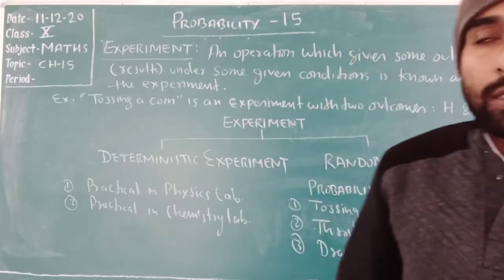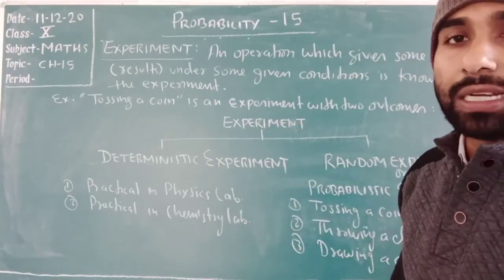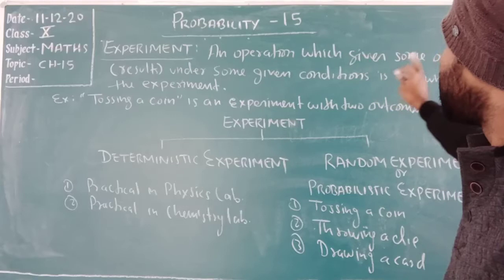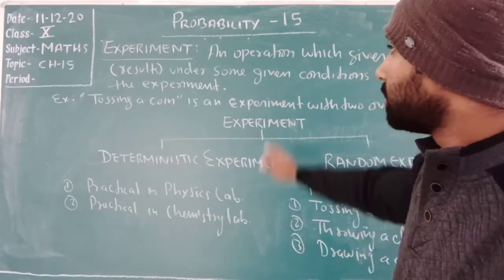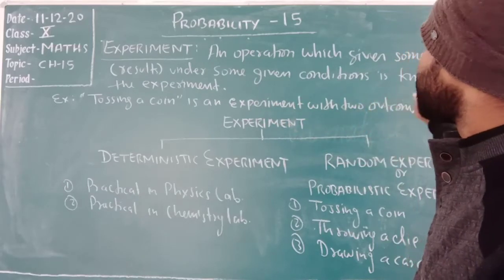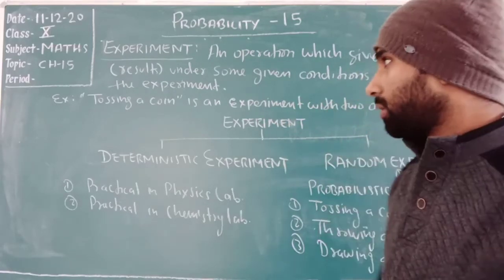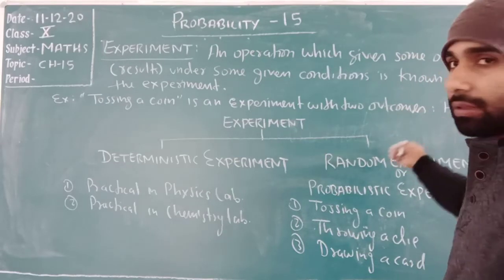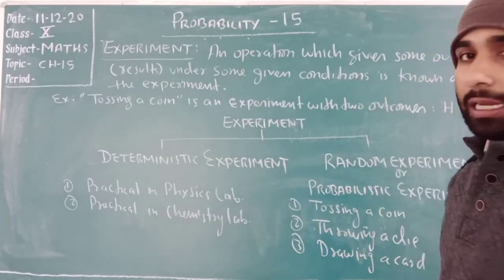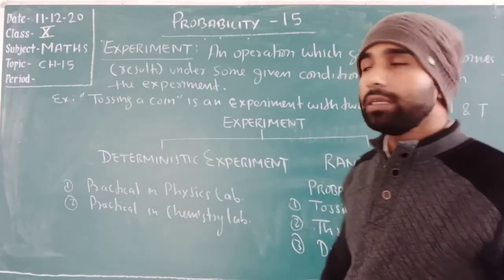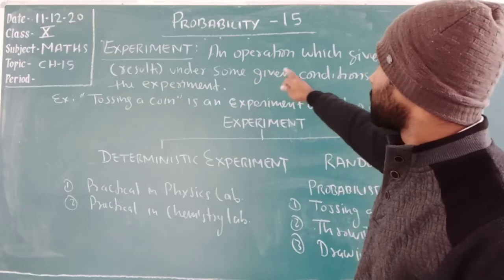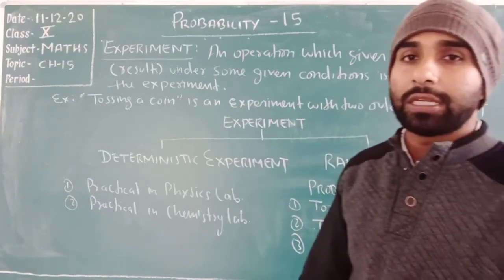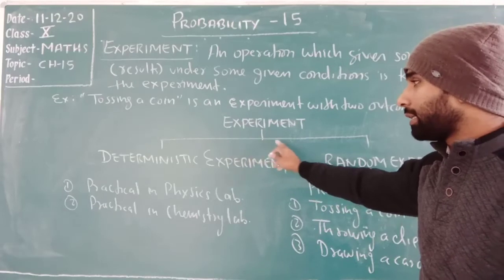Now the next point is experiment. What is experiment? An operation which gives some outcomes — outcomes means result — under some given conditions is known as the experiment. For example, tossing a coin is an experiment with two outcomes: either we will get head or tail. You can see experiment is also categorized in two parts.